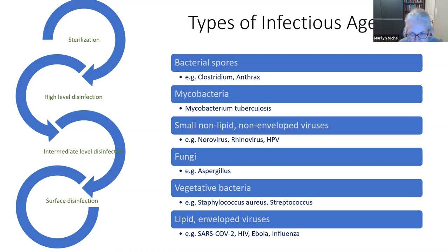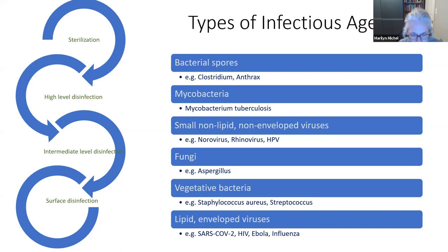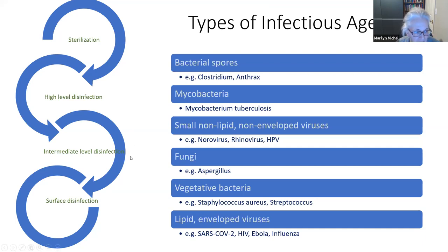Make no mistake — just because lipid-envelope viruses are easier to kill does not mean they are not significant pathogens. Influenza causes about 35,000 to 60,000 deaths every year. We have a hierarchy of how to kill germs: sterilization kills everything; high-level disinfection uses glutaraldehydes or OPA aldehydes; intermediate-level disinfection includes pasteurization; and then surface disinfectants.